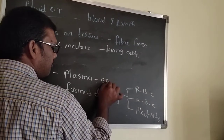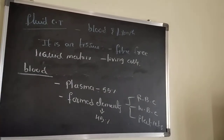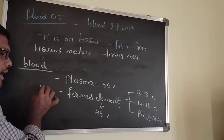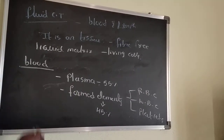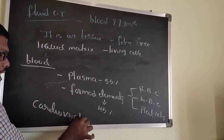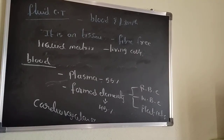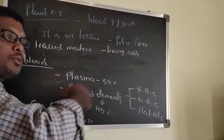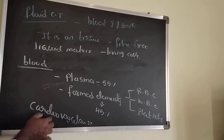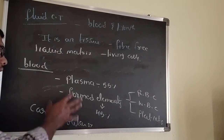Plasma is occupied by 55% and formed elements by 45%. This tissue circulates to all parts of the body by the help of the cardiovascular system. The heart pumps the blood to all parts of the body. That is why blood is linked to the cardiovascular system. Now first we can go for the plasma.